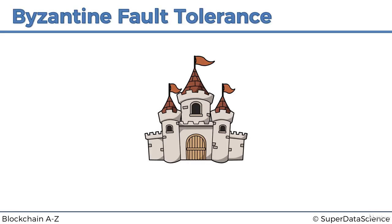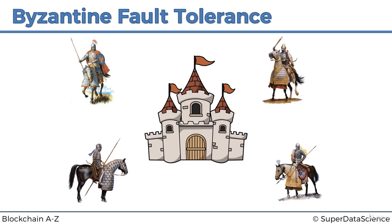The story goes that a long long time ago there was a castle which the Byzantine Empire wanted to attack and take over. I think it's a made-up story — they just used the name 'Byzantine generals.' There are four generals surrounding a castle and they want to attack it, though it can be any number of generals.